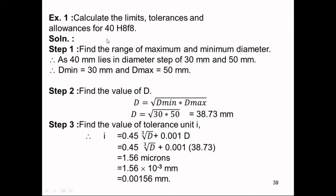Now we have a numerical to solve. Calculate the limits, tolerance, and allowances — three factors are asked. Limits means you have to find the maximum and minimum, that is upper and lower limit. For both hole and shaft — capital H is provided and small f — so a shaft and a hole are both there, meaning a fitment exists. Whenever fitment is there, allowance can be calculated, and tolerance for both can be found. First step: find the diameter range. The basic size is 40, so it lies in the 30 to 50 zone.